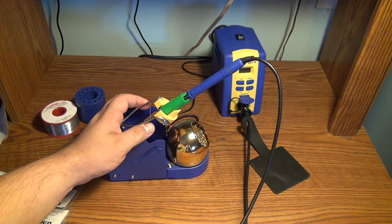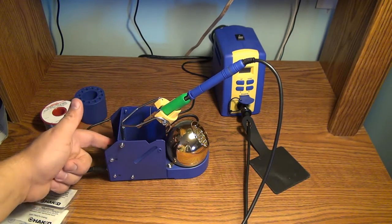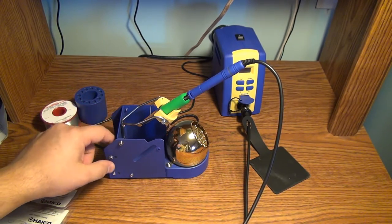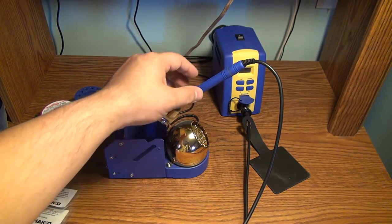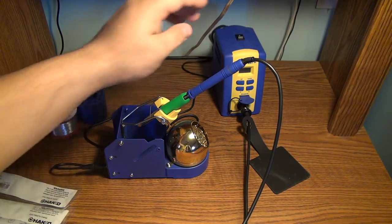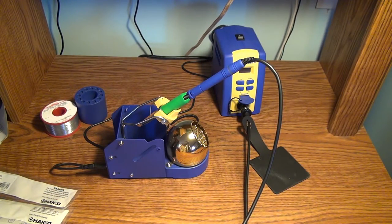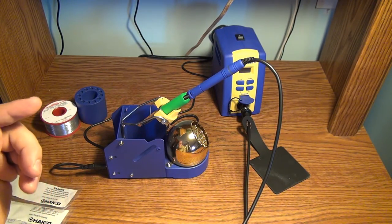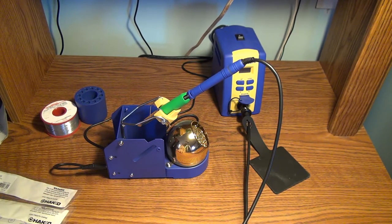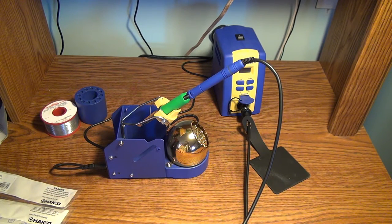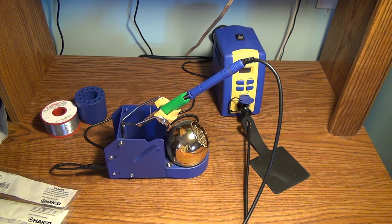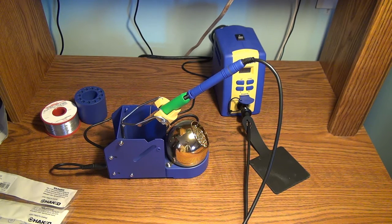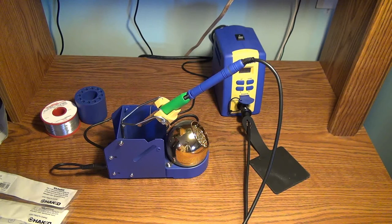The way Hakko shuts the tip down doesn't quite shut the tip down like the JBC does. But whenever you hang the wand up in the stand, and you might actually be able to hear it, there's a little—this stand rocks back and forth—and there's a little micro switch down here. That micro switch tells the soldering station that the tip has been hung up. What the soldering station does is, instead of shutting the tip down completely, it idles the tip.